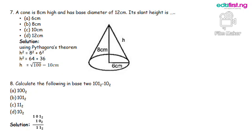0 minus 1, it cannot go. Then we borrow 1 there. And bear in mind that we are solving in base 2. That 1 you borrowed now becomes 2. So 2 minus 1 will give us 1. So the correct answer is option C.